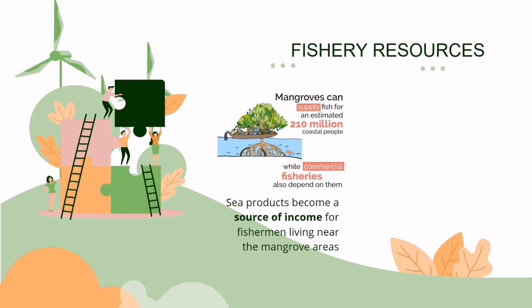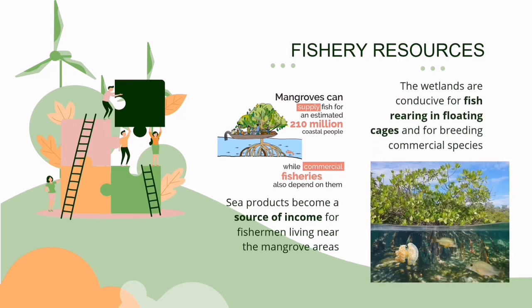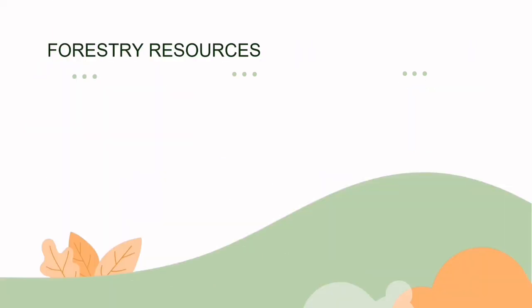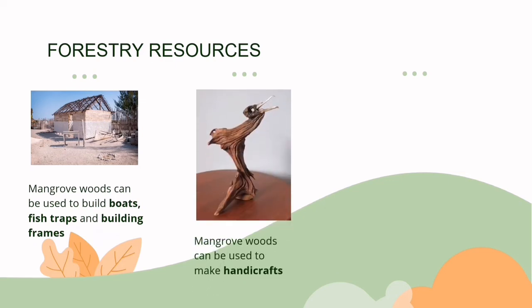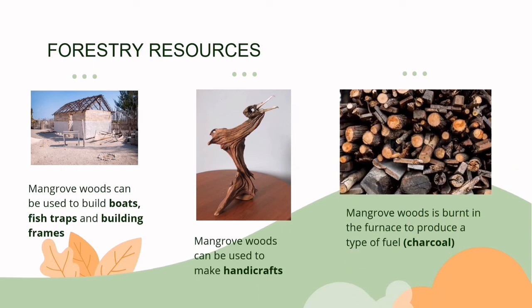Fishery resources: sea products become a source of income for fishermen living near mangrove areas. The wetlands are conducive for fish rearing in floating cages and for breeding commercial species. Forestry resources: mangrove woods can be used to build boats, fish traps, and building frames, and can also be used to make handicrafts.